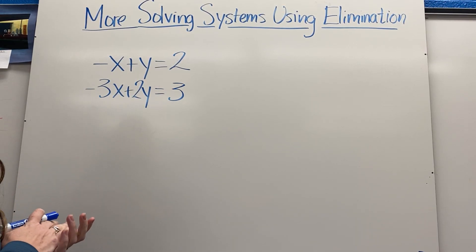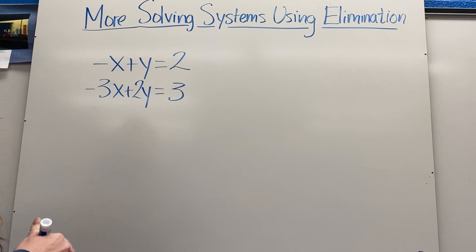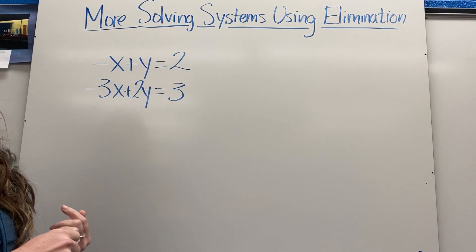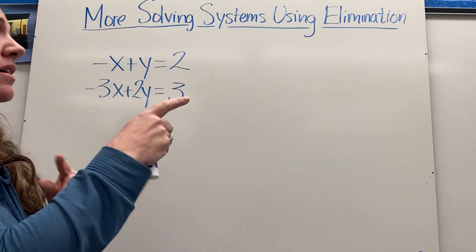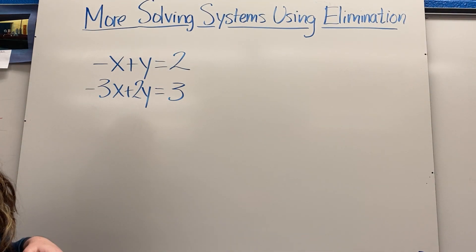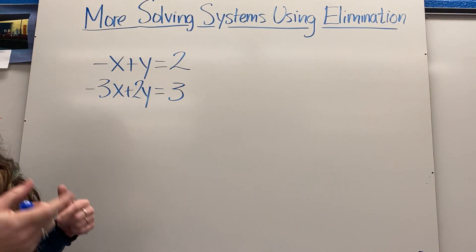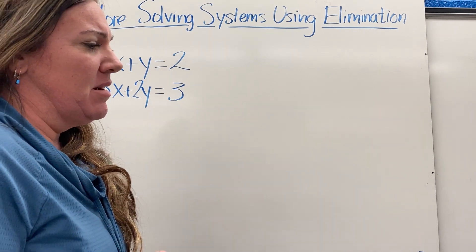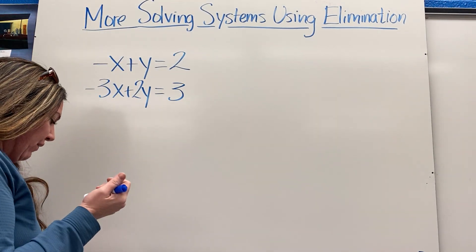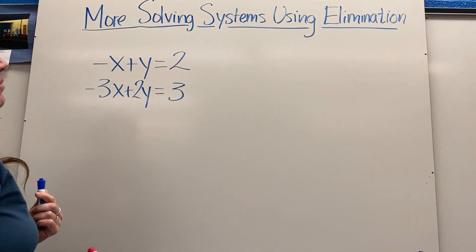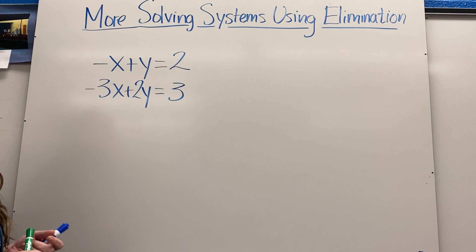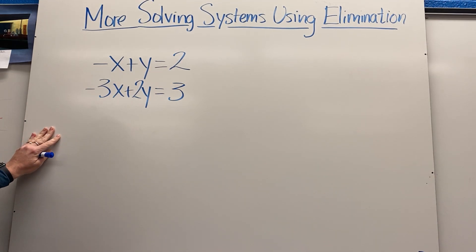Today we're going to look more at solving systems using elimination. We know that if we have the same exact coefficient on the two variables, we subtract if they're the same, and we add if they're opposites. In the last example, we looked at what to do when neither condition holds — we talked about manipulating one of the equations. That's where we're starting today, and we'll go through a couple of examples and a story problem.